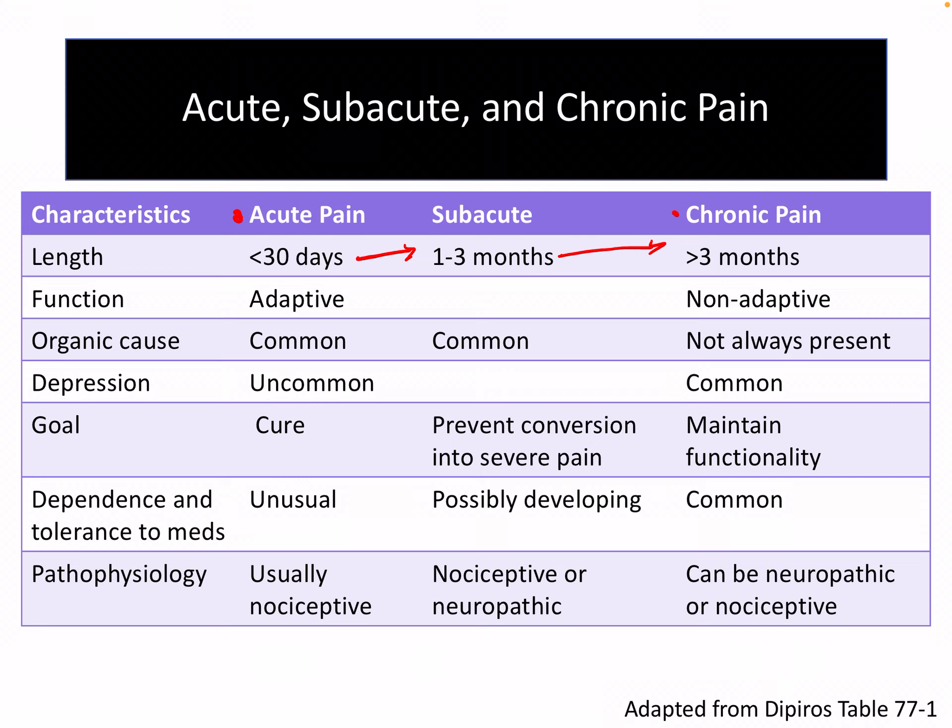Organic causes are usually common in acute pain — we know why the patient's having pain and we can identify it — but it's not always present in chronic pain. Depression is much more common in chronic pain, because often it is hard to find treatments for it and you feel a sense of hopelessness knowing that your pain may never go away, versus it's much more uncommon in acute pain. In acute pain, the goal is to help cure the underlying problem and thus cure the pain, versus in chronic pain we really can't cure the underlying problem, so we're trying to just maintain functionality.